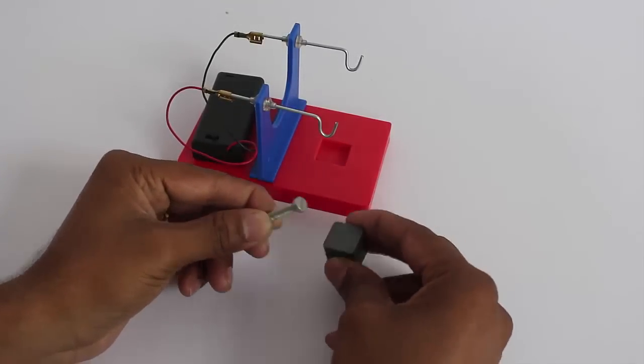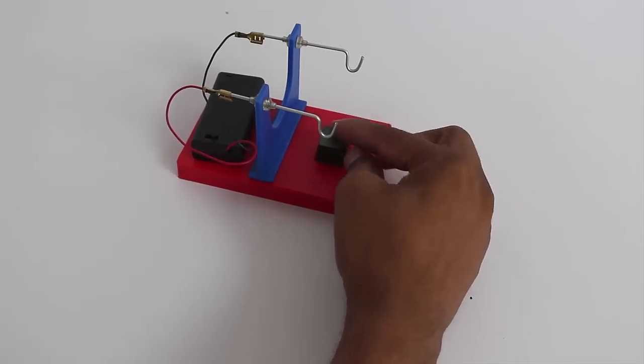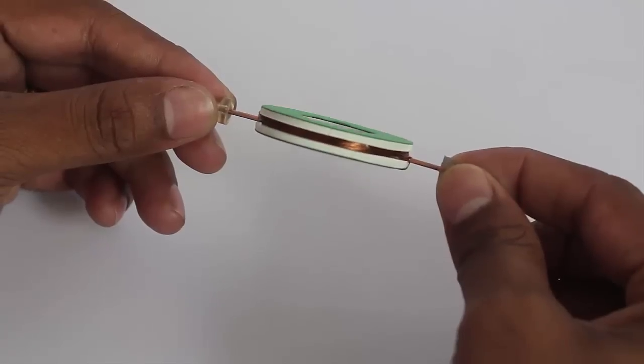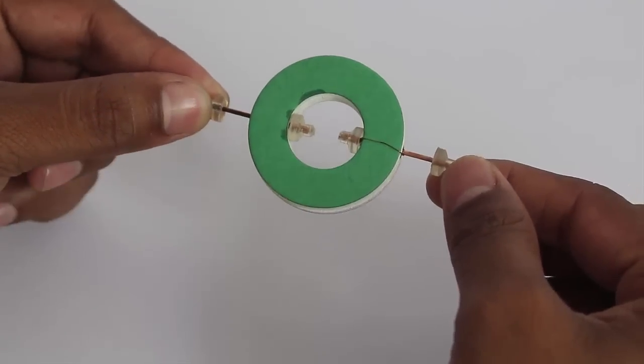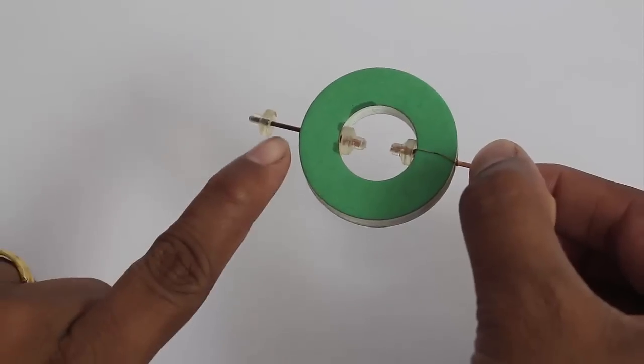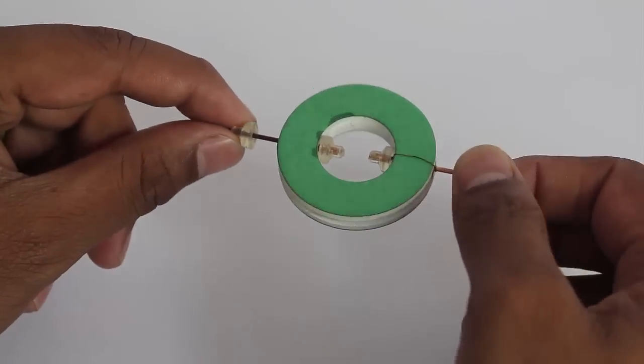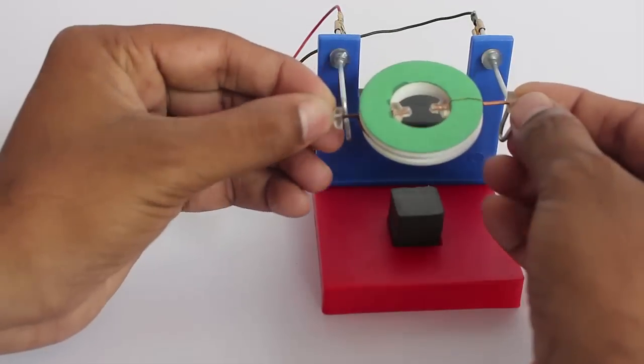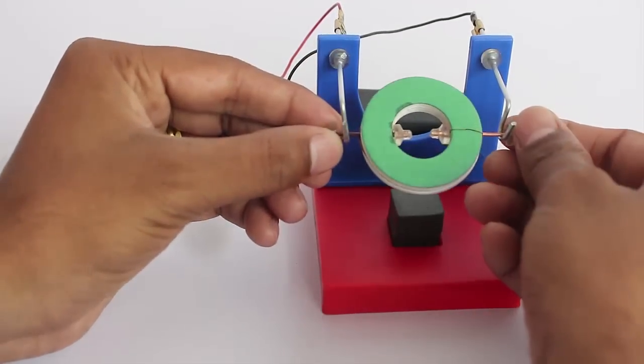This is the motor where you can see the ends are uninsulated, except for this part where we have left the insulation. This is the key to running this motor. As soon as we place this coil in these slots and give it a little push, the motor starts to run. This is because when the uninsulated part of the coil touches the wires, it experiences a torque.